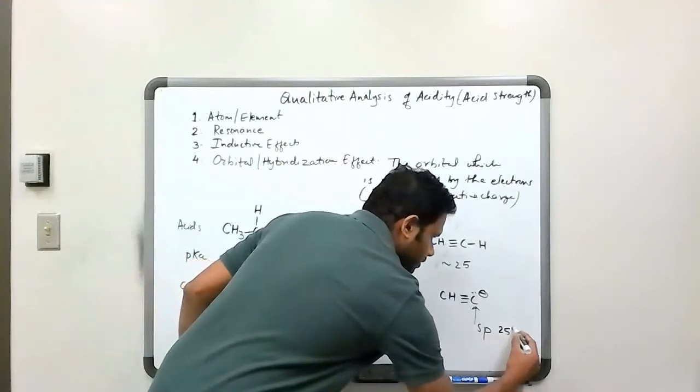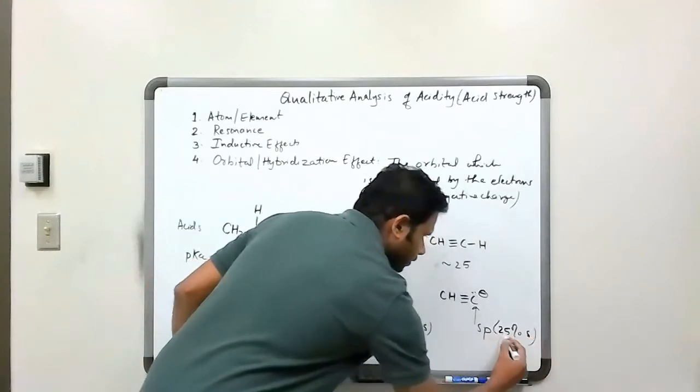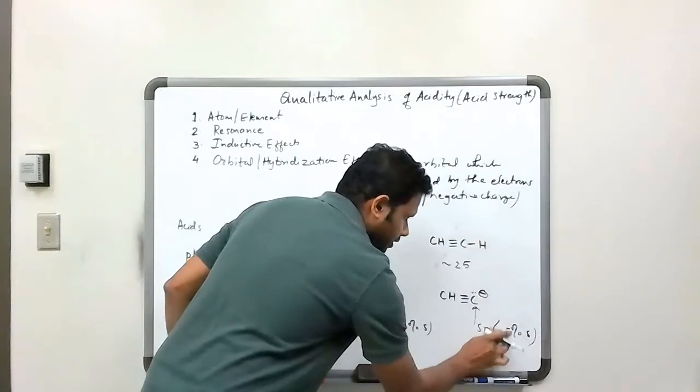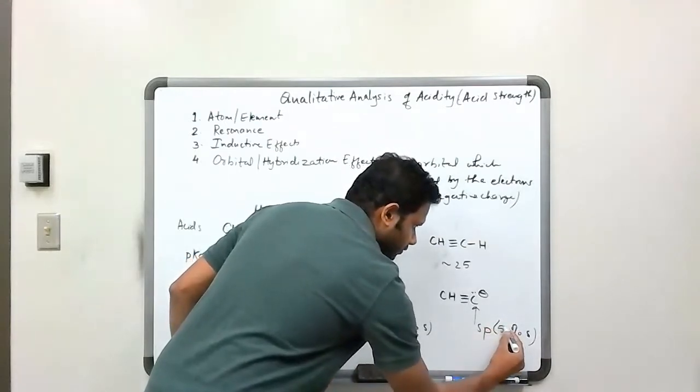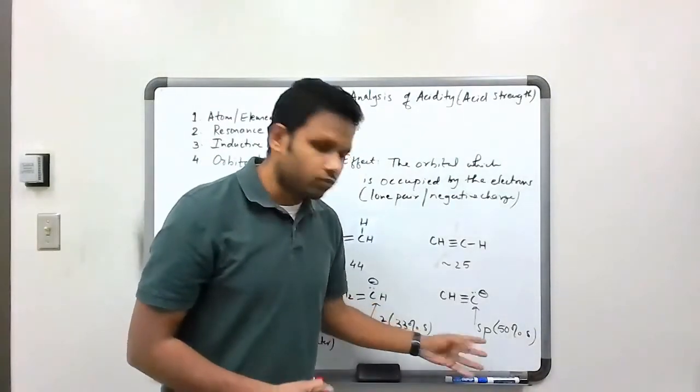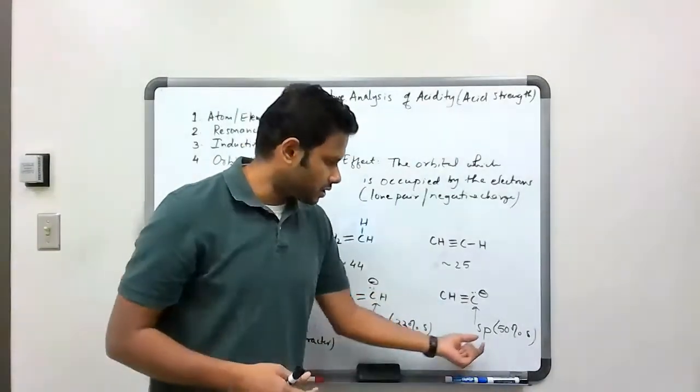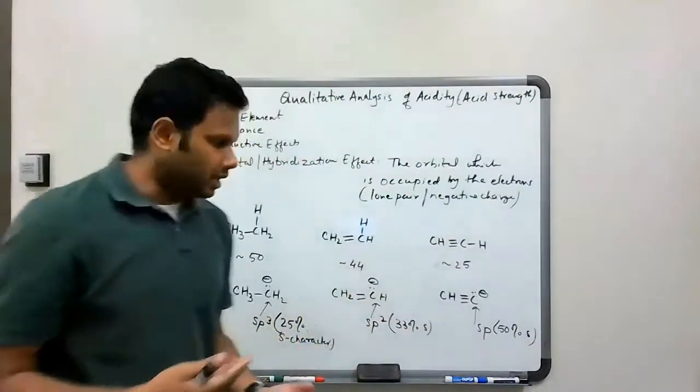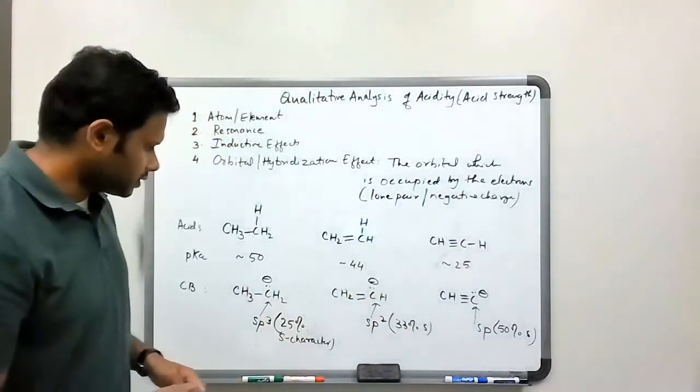And sp hybridization is a 50% s character, because there are only two orbitals, one s and one p, when we did the hybridization, and one of those orbitals is an s orbital, so it's a 50% s character.